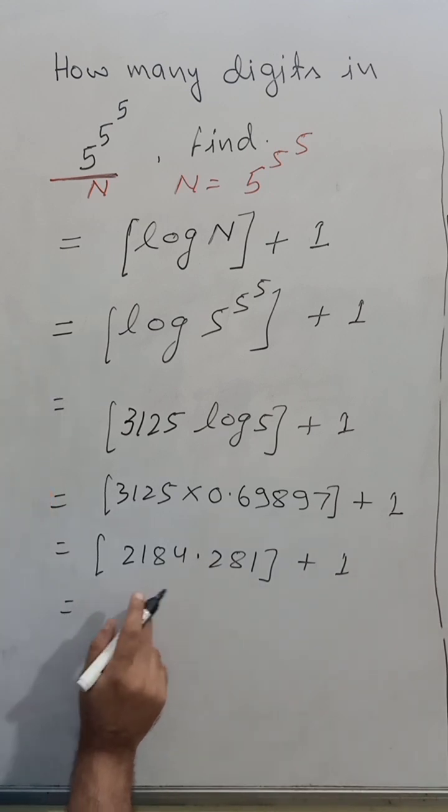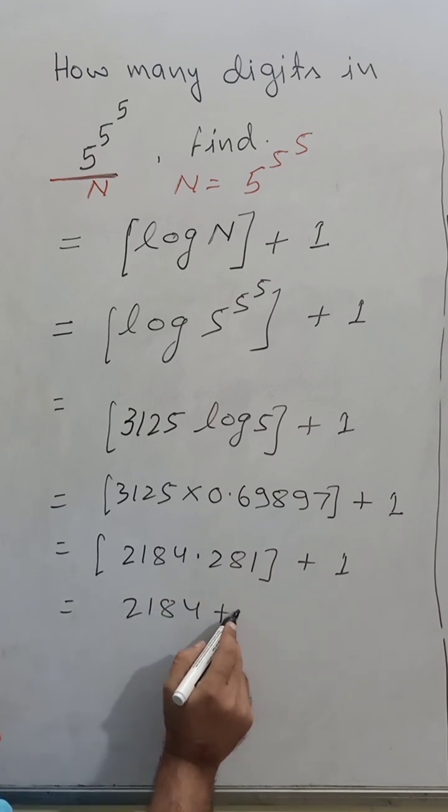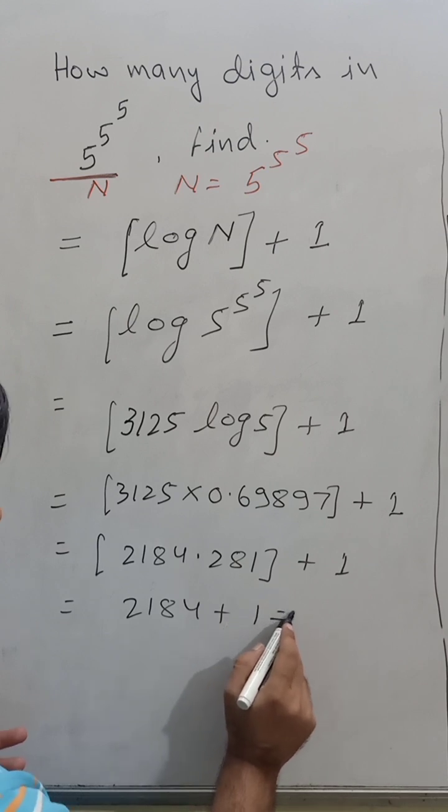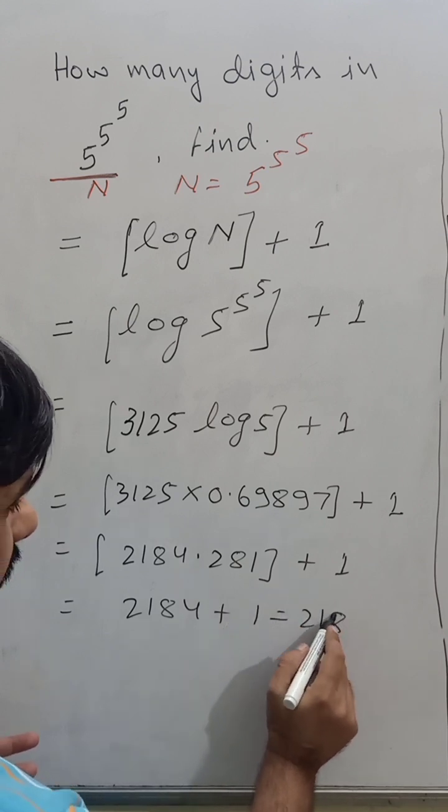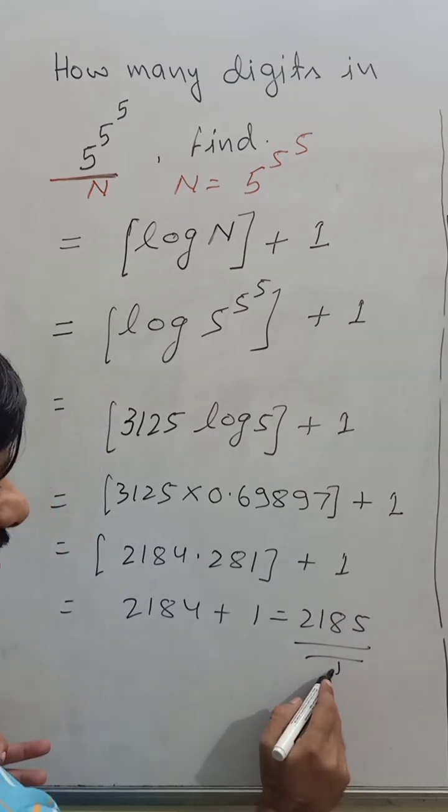Its GIF value is - after decimal we ignore - 2184 plus 1 equals 2185. This is the final answer, the number of digits.